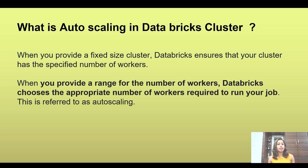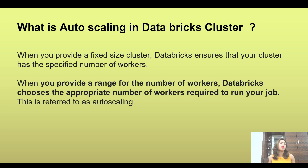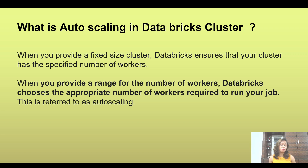Let's say you have specified a range of two to eight workers. If your job needs two more workers, Databricks will automatically go ahead and fetch those two additional machines. Conversely, if your workload drops and it no longer needs a worker, it will drop that worker. This is what is called auto scaling — Databricks automatically fetches or releases machines based on usage.